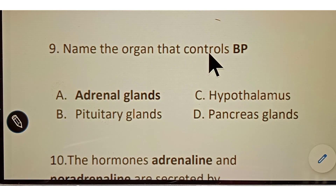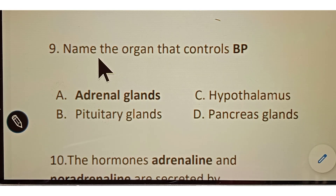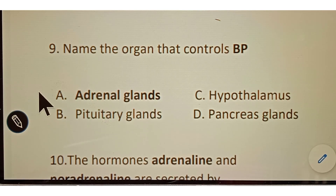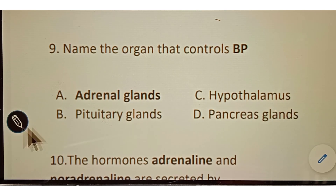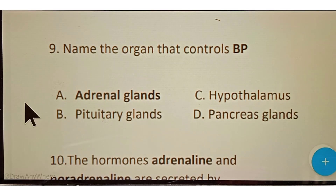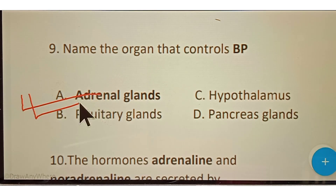Question number nine: name the organ that controls blood pressure. Options given: A. Adrenal glands, B. Pituitary glands, C. Hypothalamus, D. Pancreas gland. The correct answer is option A, adrenal glands. Adrenal glands control blood pressure.